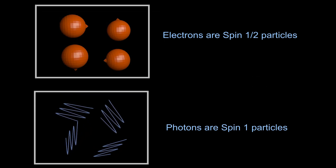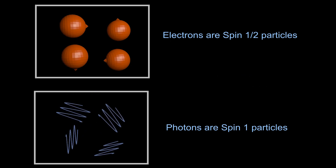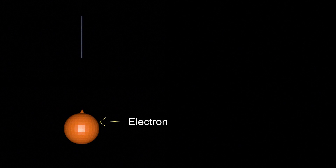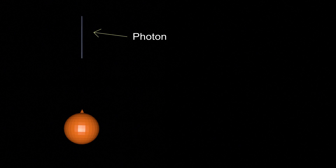Electrons are spin one-half particles and photons are spin one particles. When we rotate a photon and an electron by 360 degrees clockwise, the electron appears to complete one full rotation and reach its initial state, but actually it doesn't. It needs one more full rotation to reach its initial state because electrons are spin one-half particles. The photon, however, completes one full rotation and reaches its initial state without needing another rotation, because it is a spin one particle.